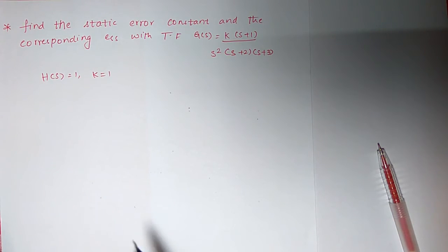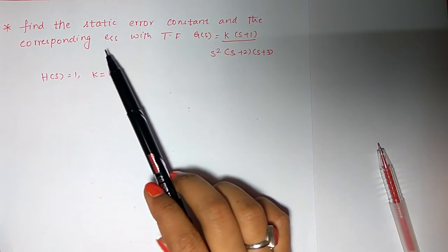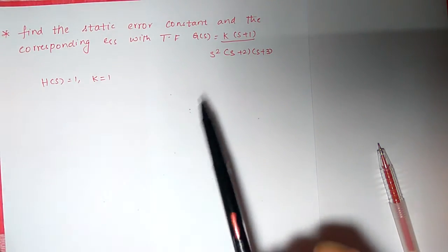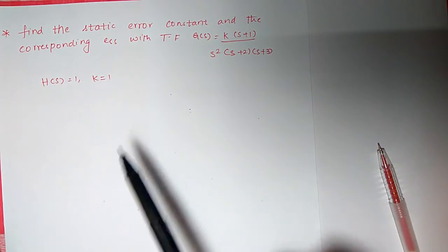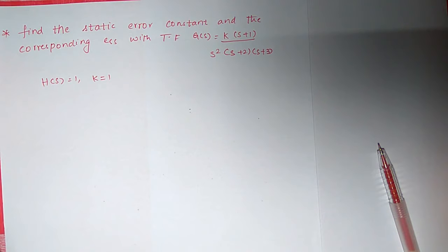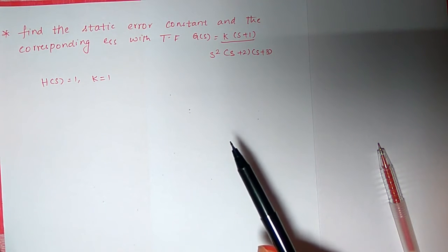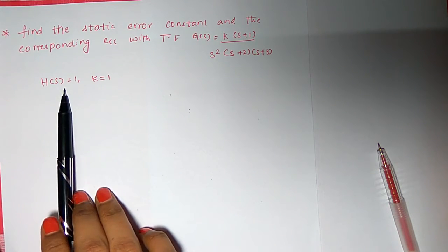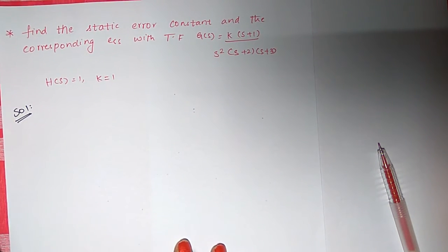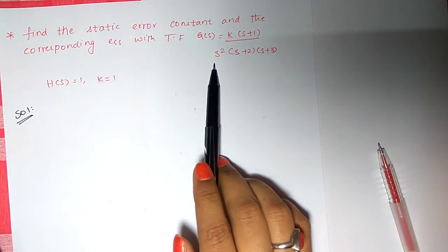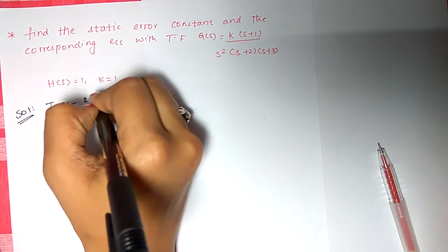Let's solve one more example. Find the static error constants KP, KV, and KA, and the corresponding steady state errors for the given transfer function. The given transfer function is open loop transfer function G(s), so no conversion is needed. It is a unity feedback system with K equals 1. First, identify the type of system — it is a type 2 system.